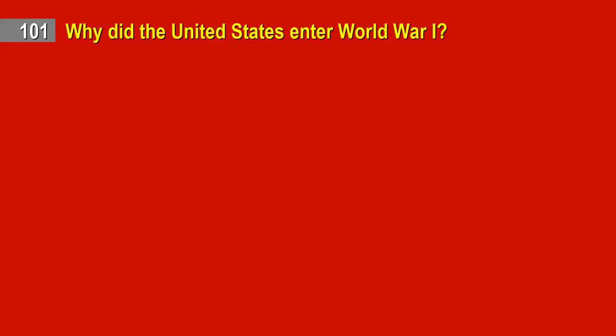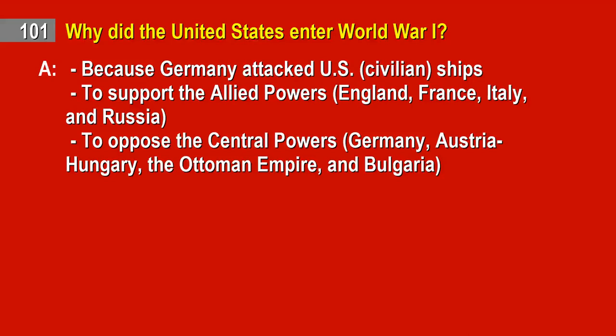Question 101. Why did the United States enter World War I? Answer: Because Germany attacked U.S. civilian ships. To support the Allied Powers — England, France, Italy, and Russia. To oppose the Central Powers — Germany, Austria-Hungary, the Ottoman Empire, and Bulgaria.